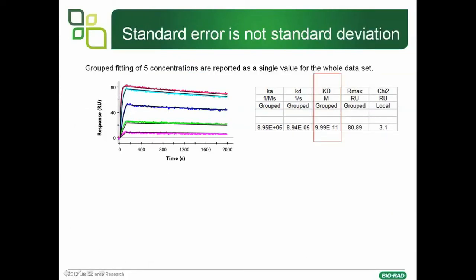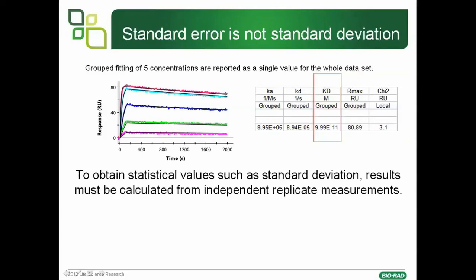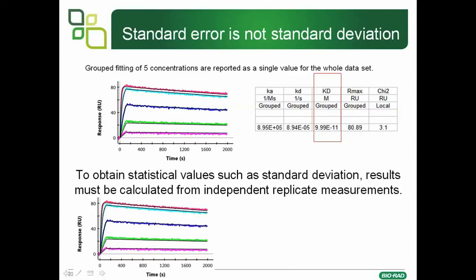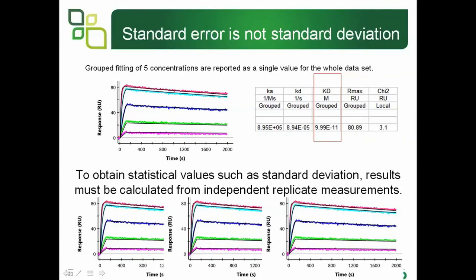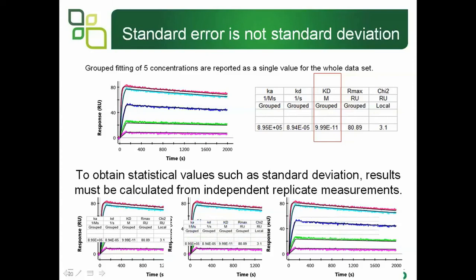It's important to note that the standard error is not the experimental standard deviation. Common best practice is to group together different concentrations and report a single Kd value. To obtain experimental standard deviation, the results must be repeated — the experiment must be repeated, for example injected again and again. Collect together the different Kd values and average these to give your experimental average and standard deviation.